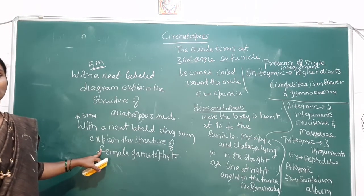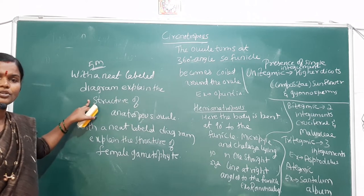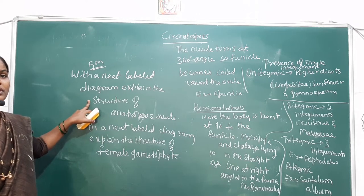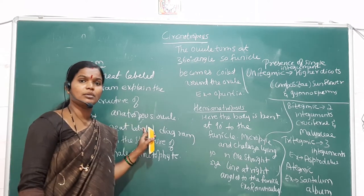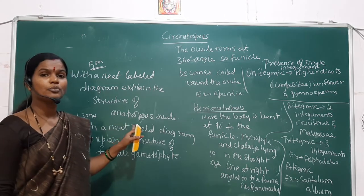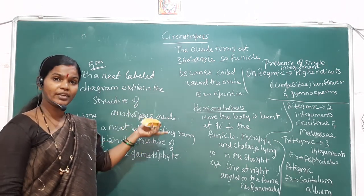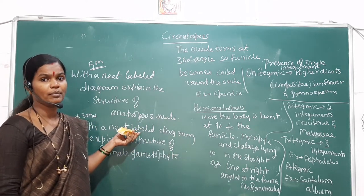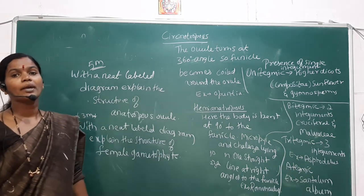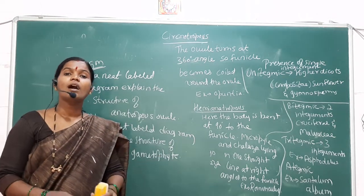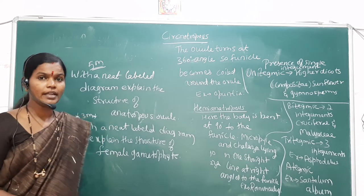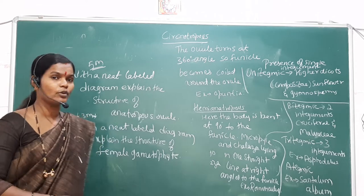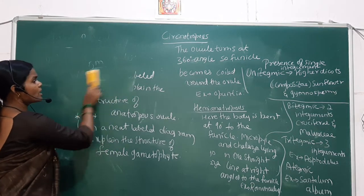The structure of the female gametophyte and the structure of the anatropous ovule are compulsory topics. In the Megasporangium topic, the pistil, Megasporangium, and the embryo sac are important concepts. In microsporogenesis, the process and the structure of the T.S. of anther are very important. This completes the Megasporangium, pistil, and female gametophyte. Next we will see Megasporogenesis.